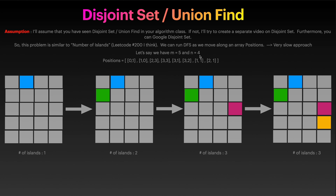Let's run this. Initially we are at 0,1 so we mark that, and number of islands will be one. Now we are at 1,0 and number of islands would be two because these two are not connected. For 2,3 they are not connected so number of islands will be three. Here it gets interesting: we have 3,3, and 3,3 and 2,3 are connected.